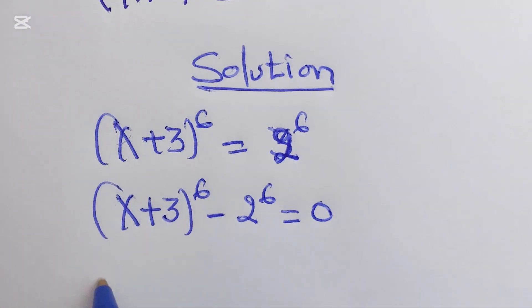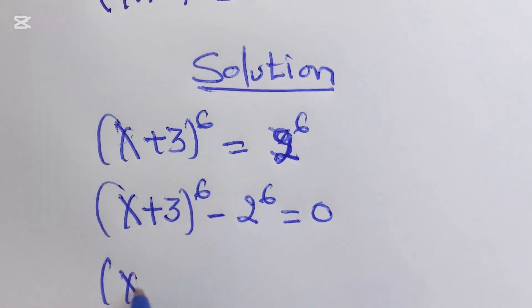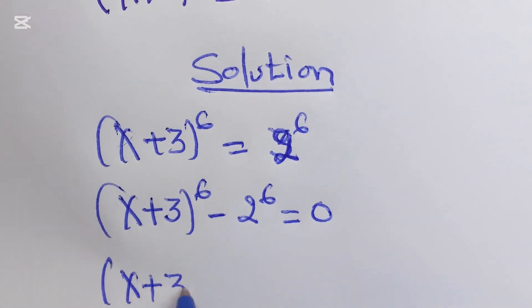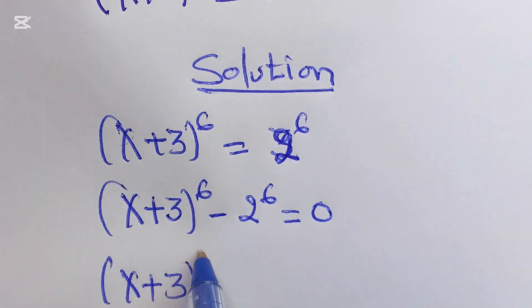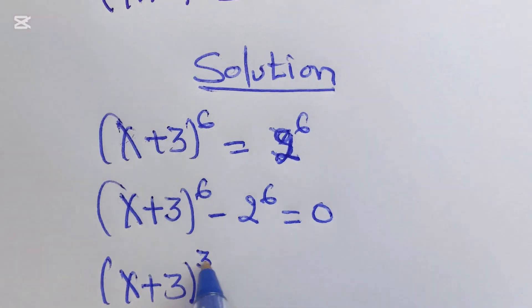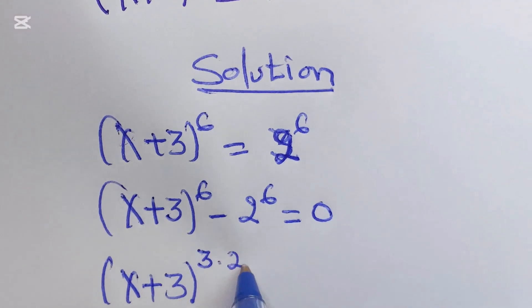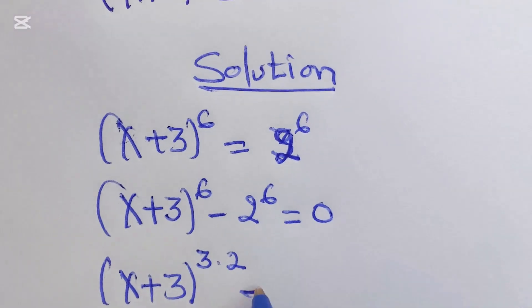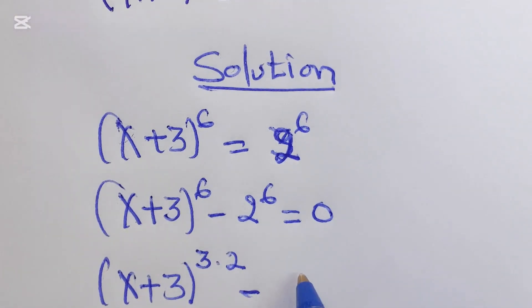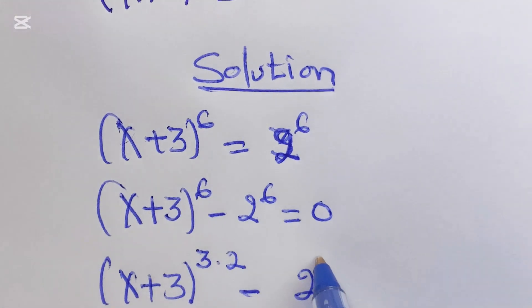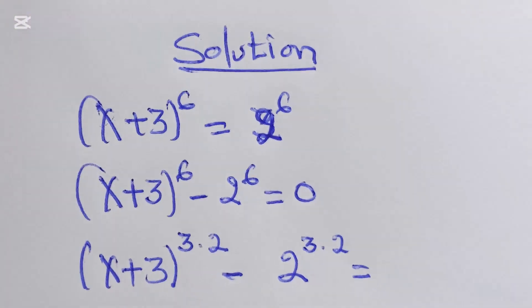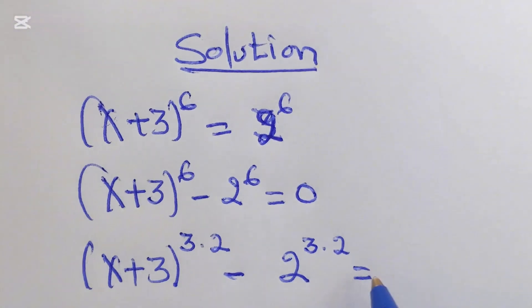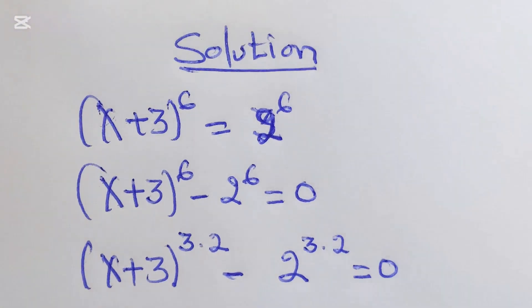This can be rewritten as x plus 3 to the power of 3, times 2, then minus 2 to the power of 3, times 2, which equals 0.